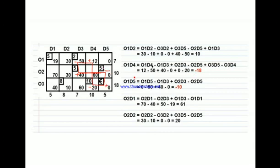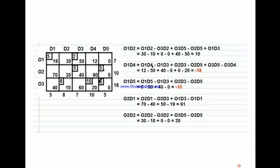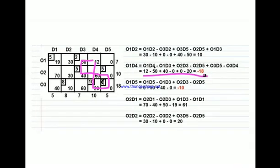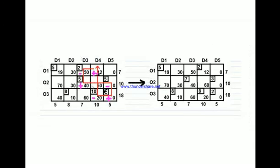So minus 18. We consider the one having the most negative value — if all the values are positive, the solution is optimal; if there is a negative value, the solution has to be fixed. The one with the most negative value is minus 18, which is the third one. We come back to the loop: starting with plus, negative, plus, negative, plus, negative, all the way back to the closed loop.